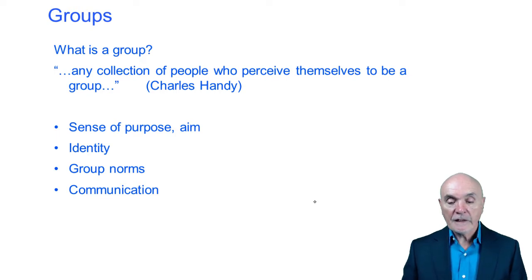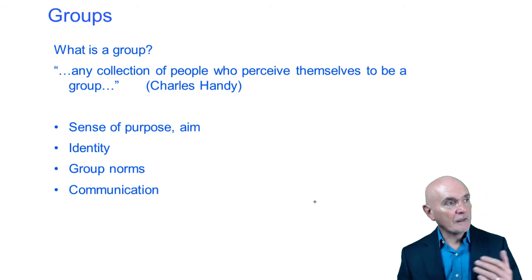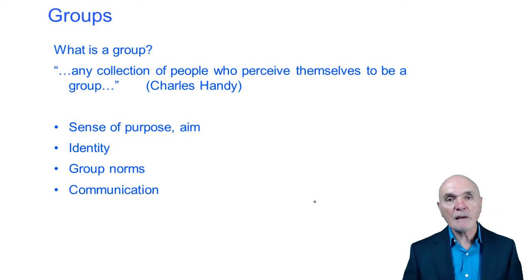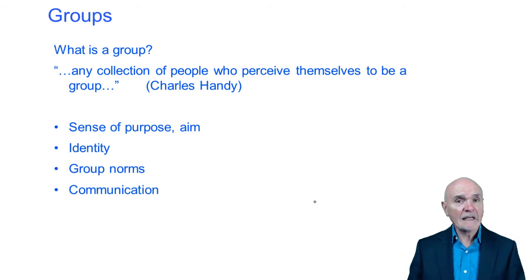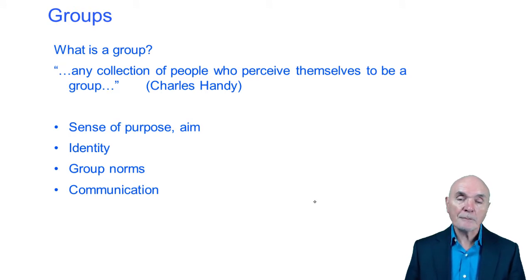The characteristics of a group, whether formal or informal: it will have a sense of purpose or aim — to implement the new IT system, to prevent redundancies, to try to increase pay, whatever the group sees its aim as. It has an identity — we know who's in the group, who's outside the group, who's a member, who's not a member. There are group norms, which are accepted ways for group members to perform. And if you want to be accepted by the group, you have to comply with these group norms.